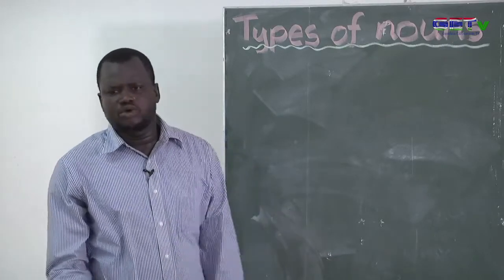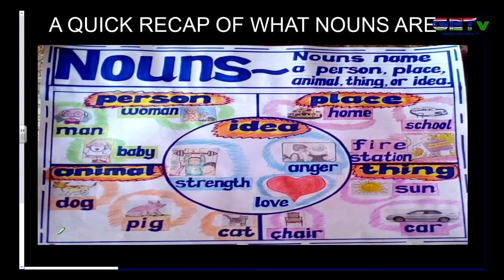Now we're going to move on with today's lesson. But before we move on, we are going to have a quick recap of what nouns are. Remember in your previous lessons, you've learned that nouns name a person, place, animal, thing, or idea. Examples of persons: woman, man, and baby.